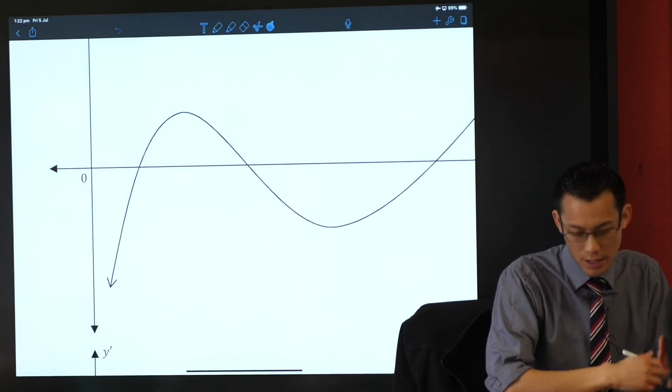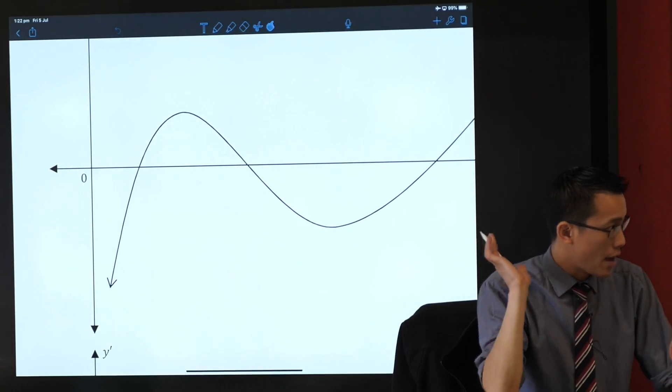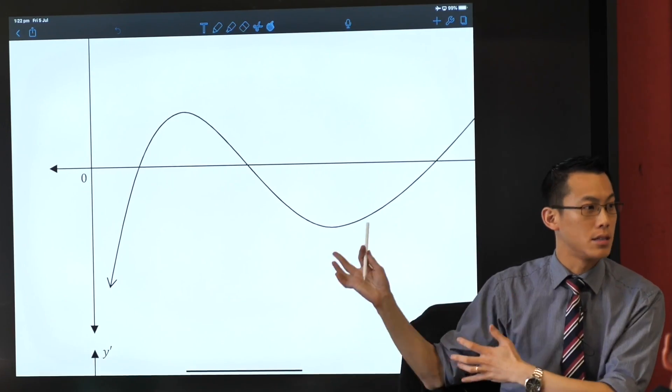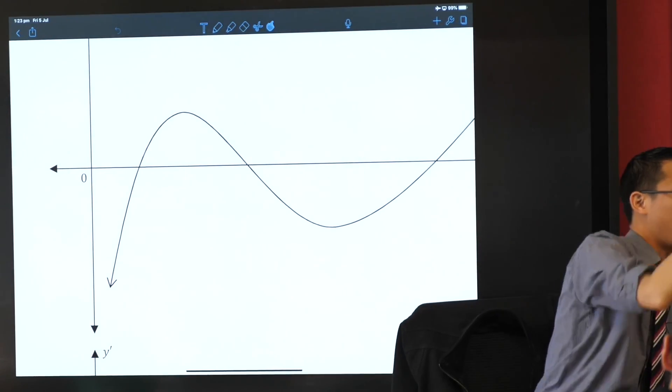Okay, so here's the first thing I'd like you to do. Have a look at this graph and have a think about, in terms of calculus, where are the most interesting or important places on this graph? A place where you can maybe tell me something.